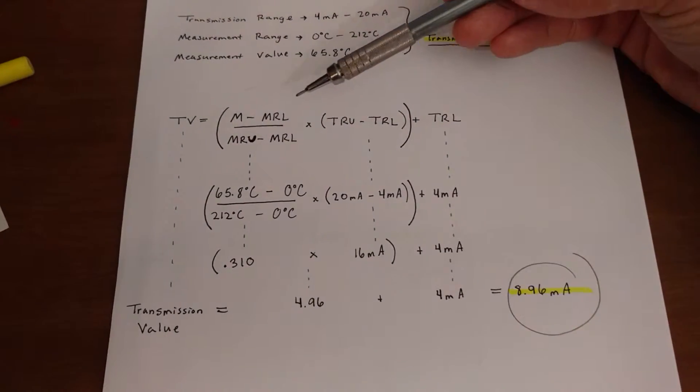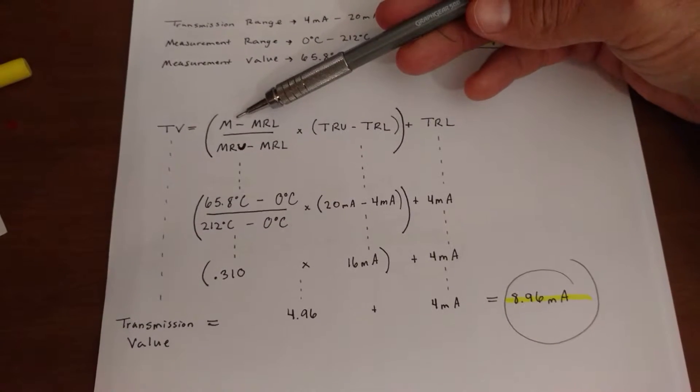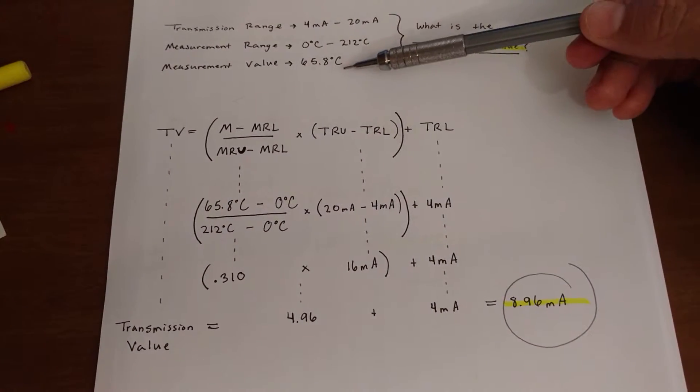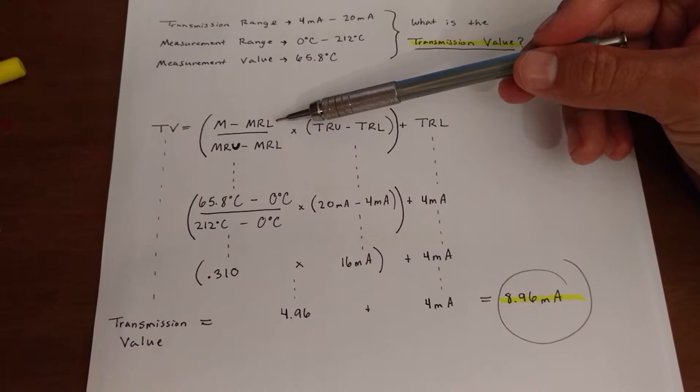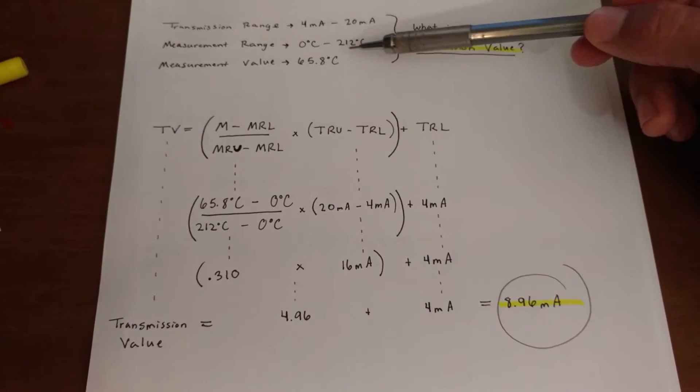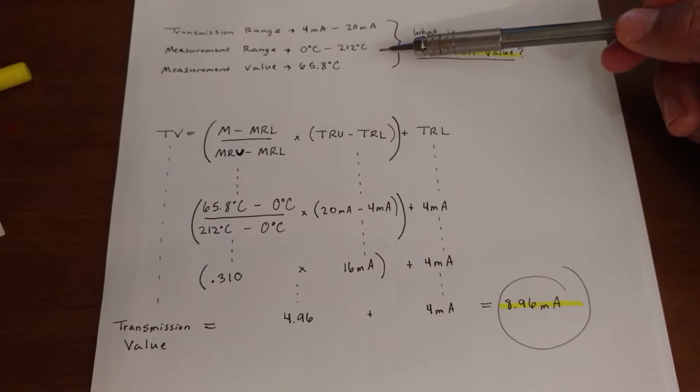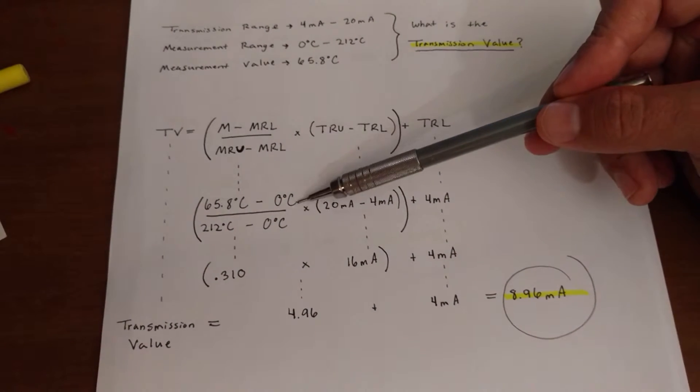So this is how we're going to do it. First of all, your M right here, this is for your measurement value, and that's given to you right here. So go ahead and plug it in. Minus your measurement range lower value. So right here, the lower value is 0 degrees Celsius in this case, so plug it in.